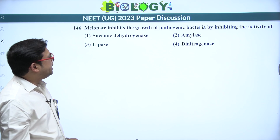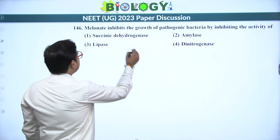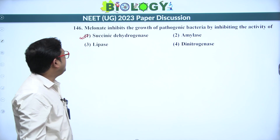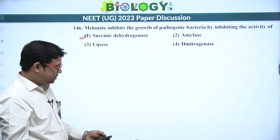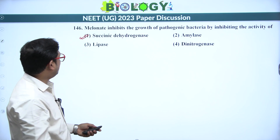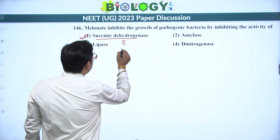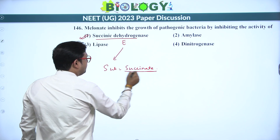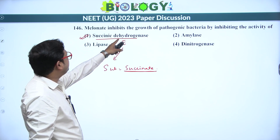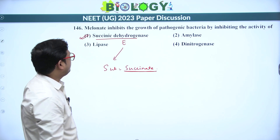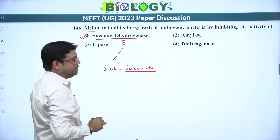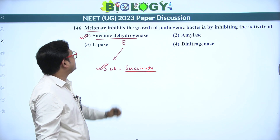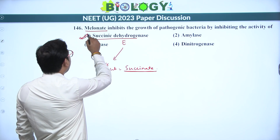Next: malonate inhibits the growth of pathogenic bacteria by inhibiting the activity of which enzyme? This is a direct question on competitive inhibition — the answer is succinic dehydrogenase. Malonate is a competitive inhibitor of succinic dehydrogenase because malonate resembles the substrate succinate. It competes with succinate for the active site of succinic dehydrogenase. Since it is not the actual substrate, no product is formed. Answer is one.